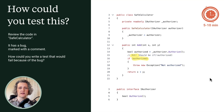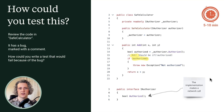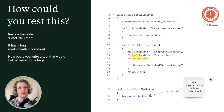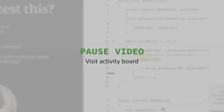In order to write this test, you'll have to deal with this IAuthorizer interface. I should note that the real implementation — which I haven't included in the exercise — would be making a network call. So how would you write a test that would expose this bug? Have a little discussion and see what you can come up with.